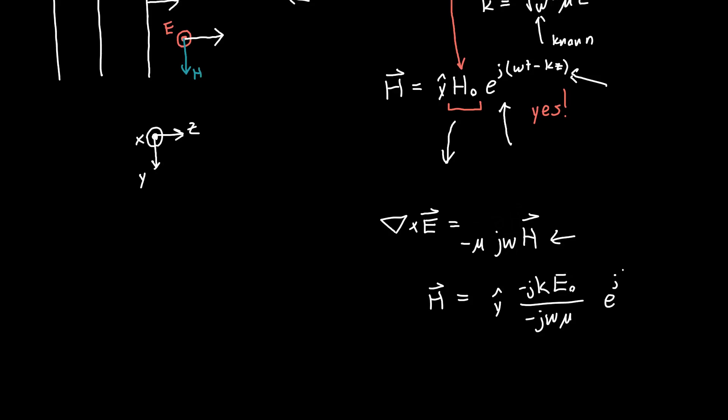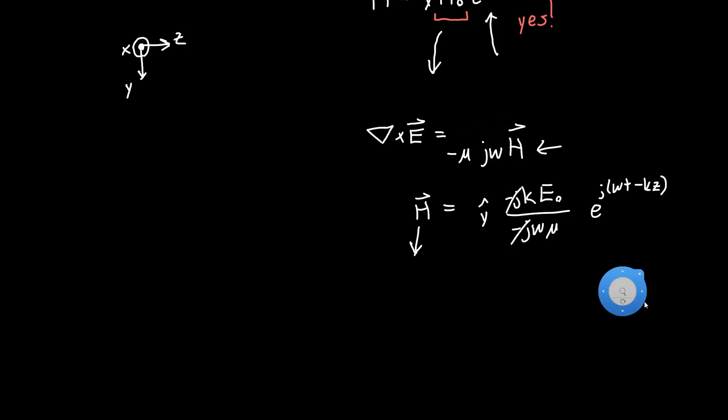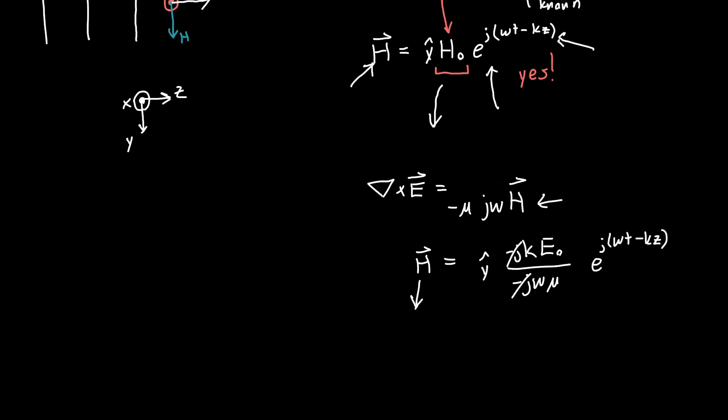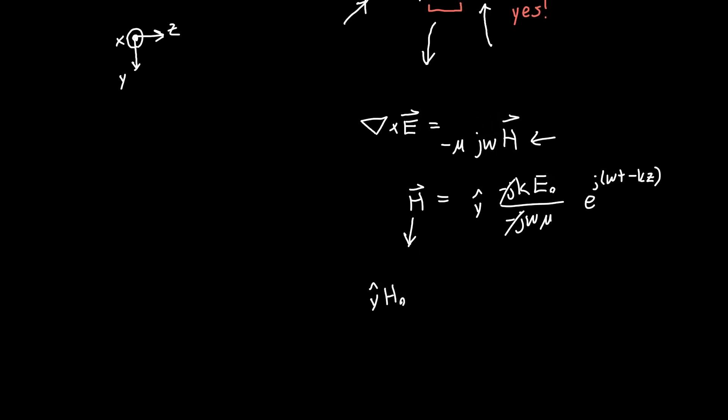E₀ and then we've got our e^(j(ωt-kz)) out back. Now these -j's both cancel and we can also replace this H with what we know it is before in terms of the unknown amplitude. So Ŷ times H₀ e^(j(ωt-kz)) should be equal to Ŷ times k/(ωμ) E₀ e^(j(ωt-kz)). And we don't need to worry about the Ŷ's, we similarly don't need to worry about these e^(j(ωt-kz)) terms. They're always going to be the same because they're appearing on both sides, so we can just cancel them from both sides, and we're left with the relationship of our amplitudes.